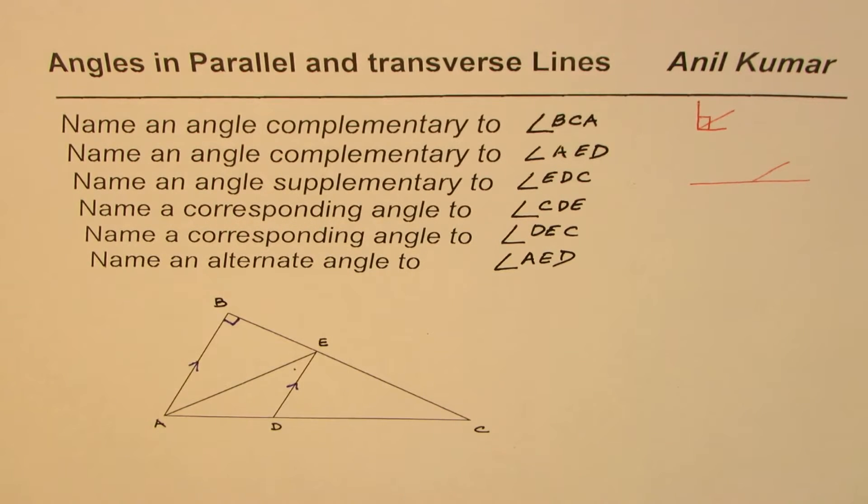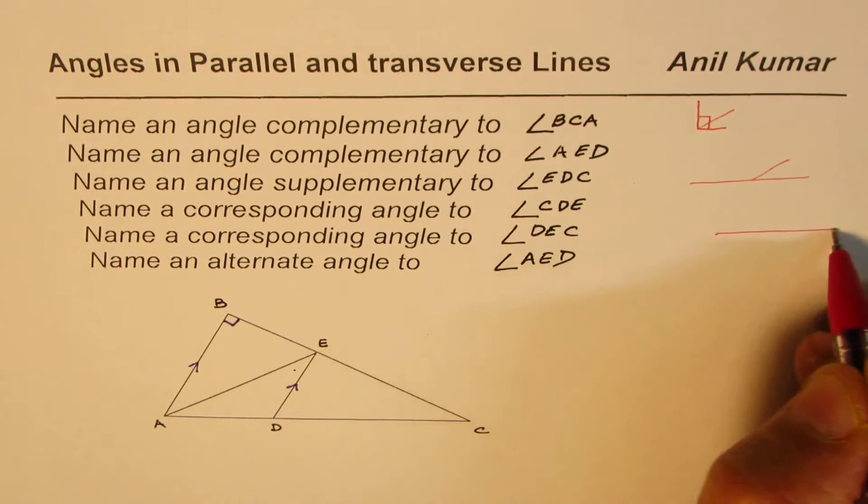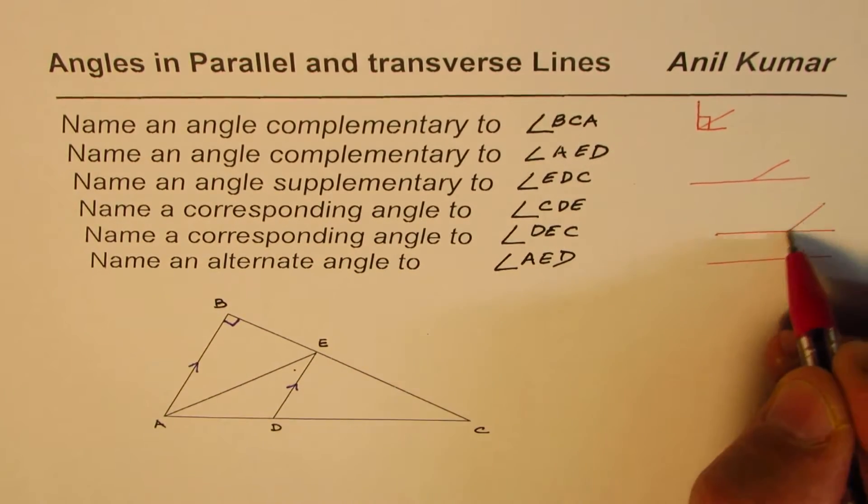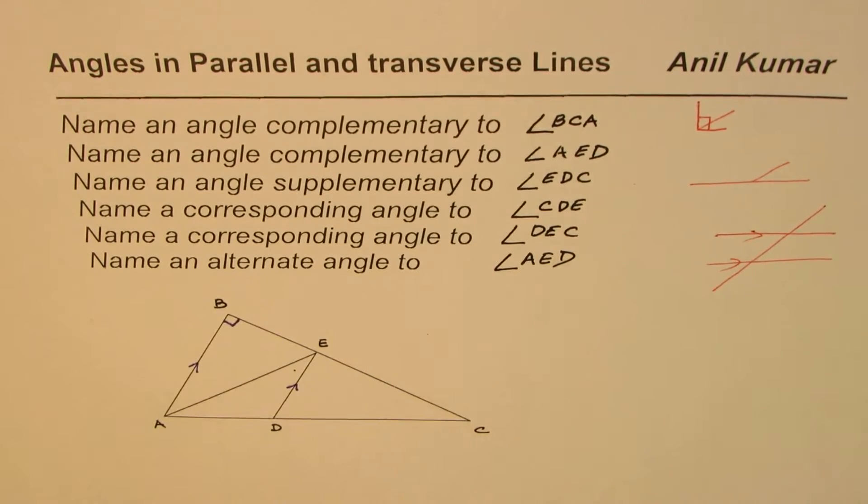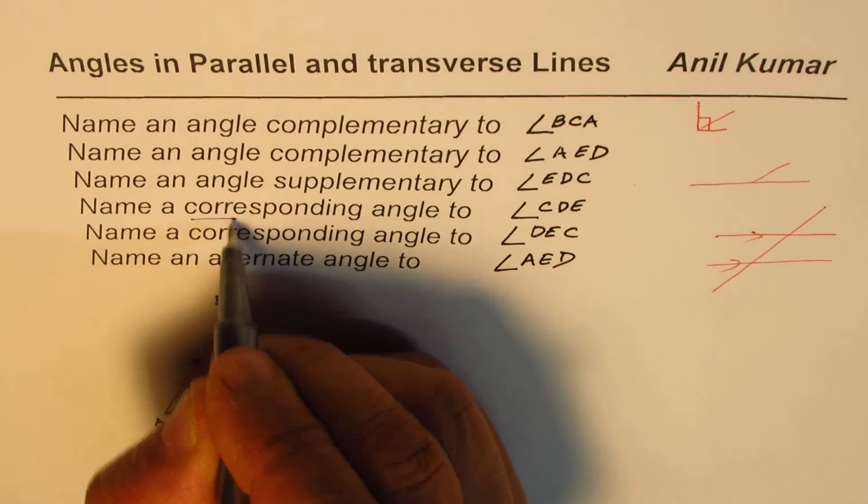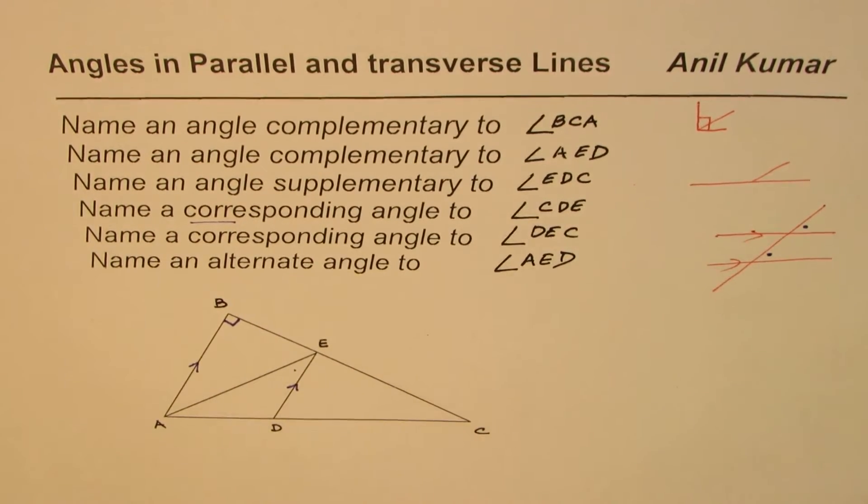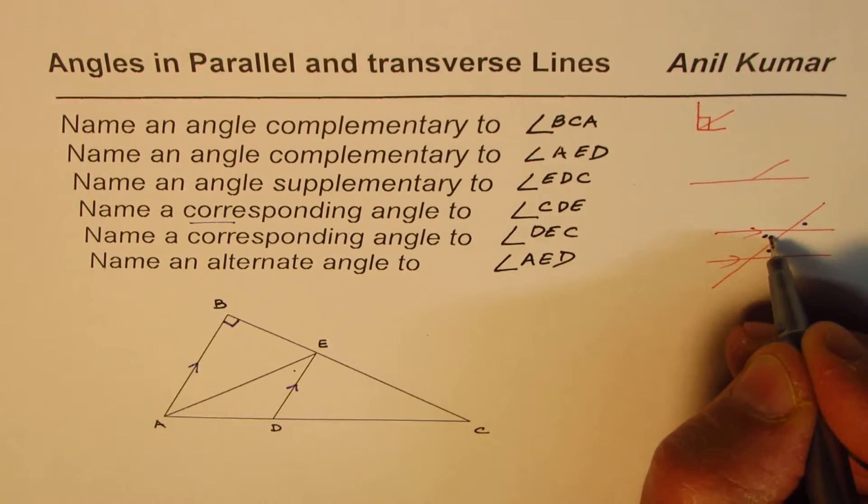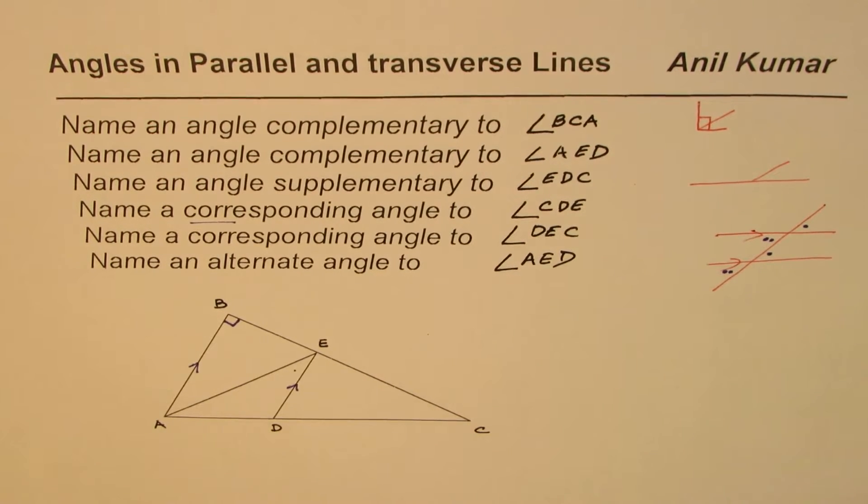Corresponding angles are the angles if I have two parallel lines cut by a transverse line, these two are parallel. Then the corresponding angles we are talking about will be like these positions, these are corresponding positions. Well it could be these also because vertically opposite, so they have similar positions with respect to the line and the transverse line correct.